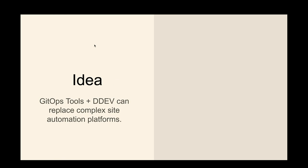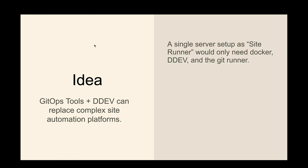GitHub's tools plus DDEV can really replace a lot of the complex stuff — my own Lagoon, Amazon, CloudSide, single servers — as a site runner. I say that because they're called runners.